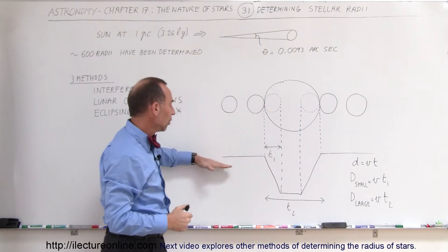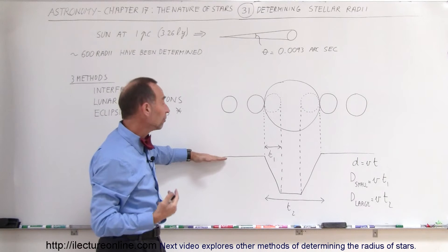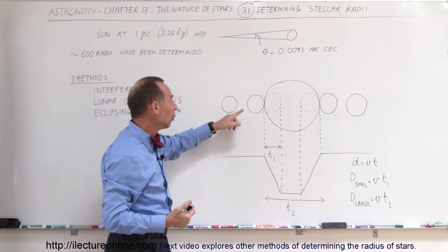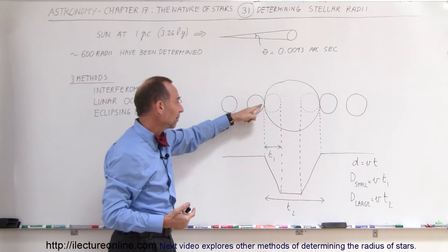When both stars are visible, the intensity and the luminosity of both stars will be at a certain level. Once a small star begins to disappear behind the big star, the total luminosity will drop.